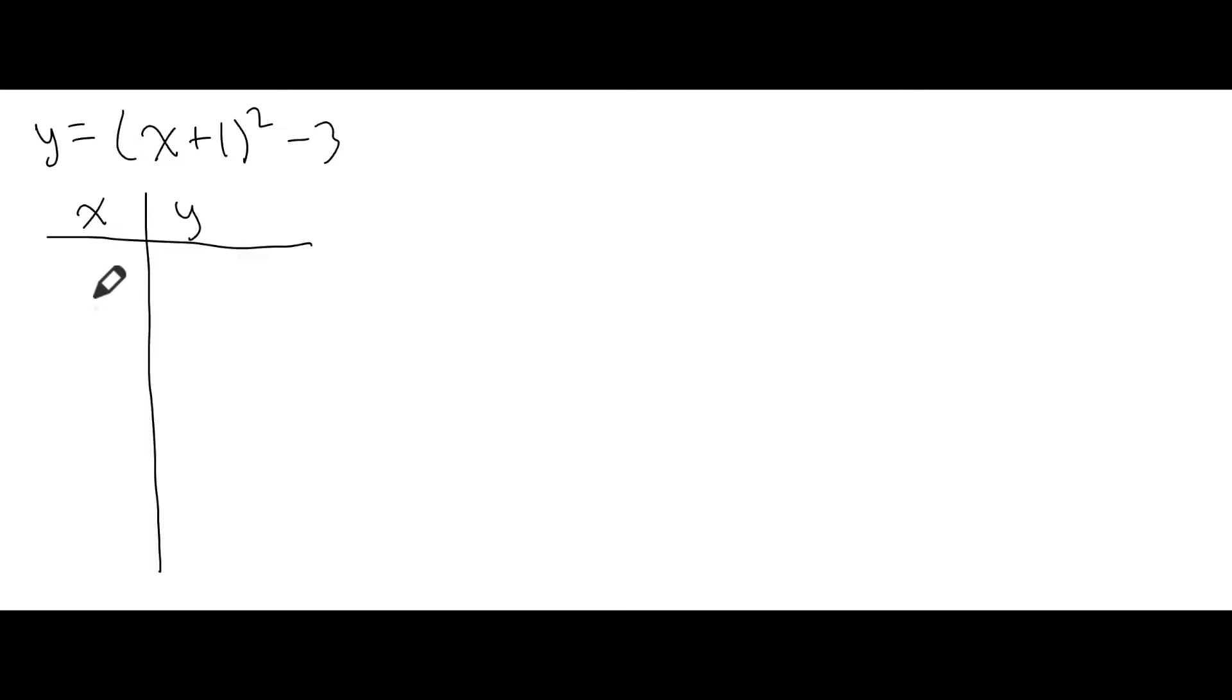We typically pick numbers that are small and easy to work with. Just by looking at this, we already know that the vertex will be at (-1, -3). This gives me a clue that I should pick x coordinates that are very close to -1, so I'm purposely going to pick small numbers here.